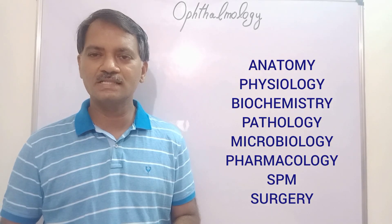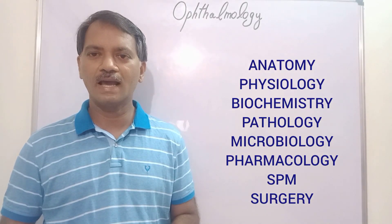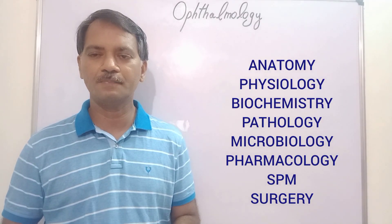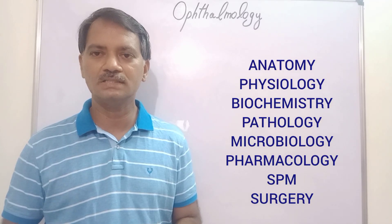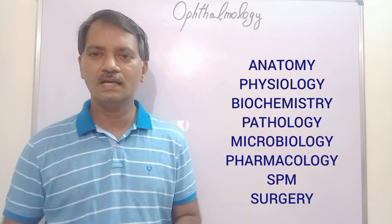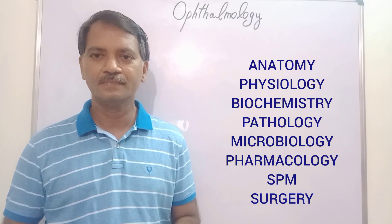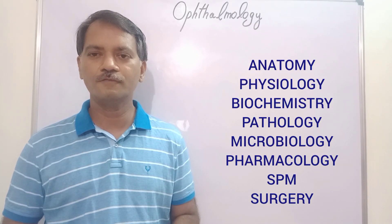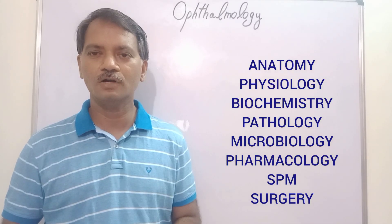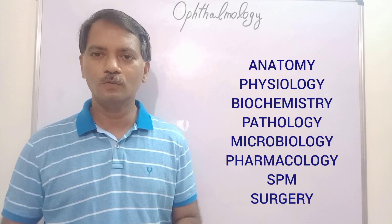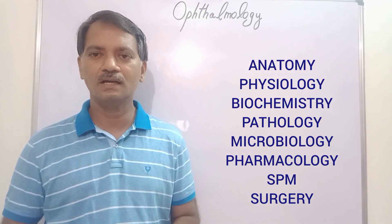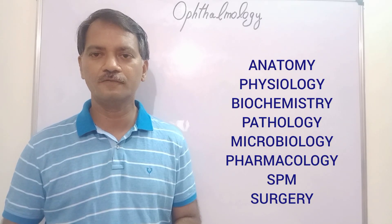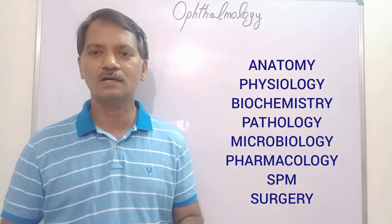Ophthalmology includes six branches of medicine: anatomy of the eyeball, the functions of the eyeball which is physiology, biochemical reactions happening in the eyeball which is biochemistry, pathological diseases in the eyeball which is pathology, infective diseases in the eyeball which is microbiology, and how to treat medical conditions of the eyeball which is pharmacology. We must also add the preventive aspects of ocular diseases — that is social and preventive medicine — as well as the surgical aspects of ophthalmological treatment.